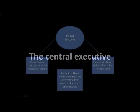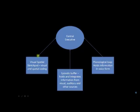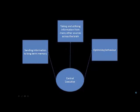The central executive. In Baddeley's model of working memory, the central executive is the master system, controlling the other three slave systems. It takes information from the slave systems and exerts top-down control to optimise behaviour. Baddeley compared it to a homunculus — a little man in the head who gives orders — as well as equating it to the supervisory attention system.